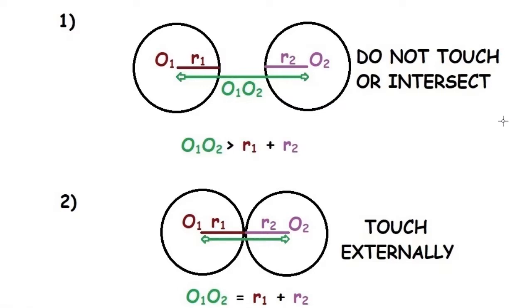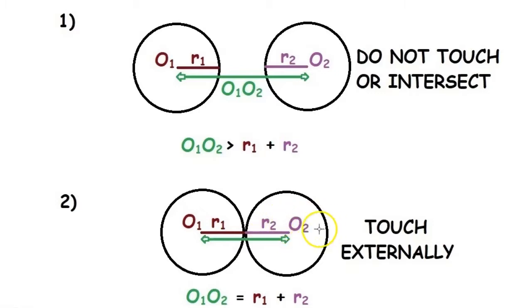When the two circles touch each other externally, the distance between the two centers is O1O2. The brown line is the length of the radius of the first circle and the purple line is the length of the radius of the second circle. So when the two circles touch each other externally, the distance between the two centers O1O2 is equal to the sum of the radii, that is R1 plus R2.